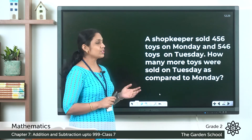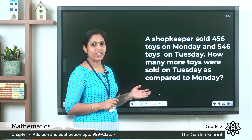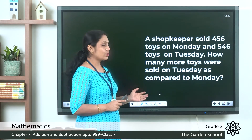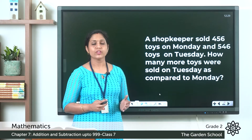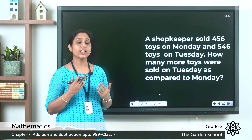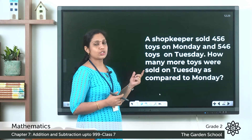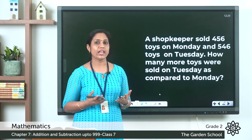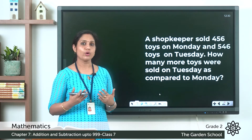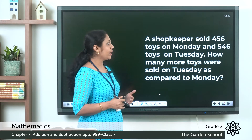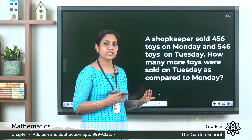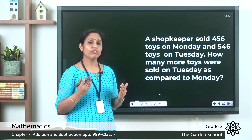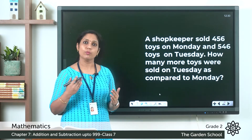Let's look at the next question. A shopkeeper sold 456 toys on Monday and 546 toys on Tuesday. How many more toys were sold on Tuesday compared to Monday? In this question the shopkeeper sold 456 toys on Monday and 546 on Tuesday. By looking at the numbers you can see that 546 is greater, so we know the shopkeeper sold more toys on Tuesday.